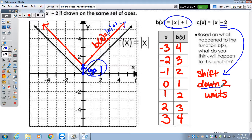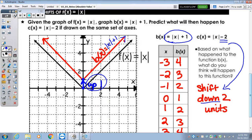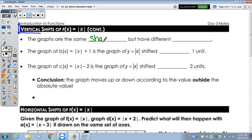Looking at a shift up and down would be a vertical shift. On this page, it says the graphs are the same blank but have different blank. So when we're shifting vertically, that's up and down. If you look on the previous page, they do have the same shape, but what's different is the y-intercept or vertex. They have the same shape, it's still a v-shape, but they have different y-intercepts and a different vertex.